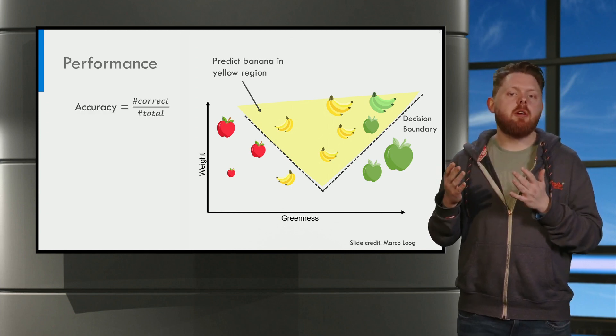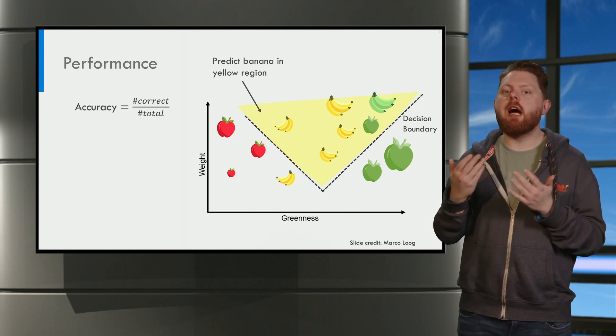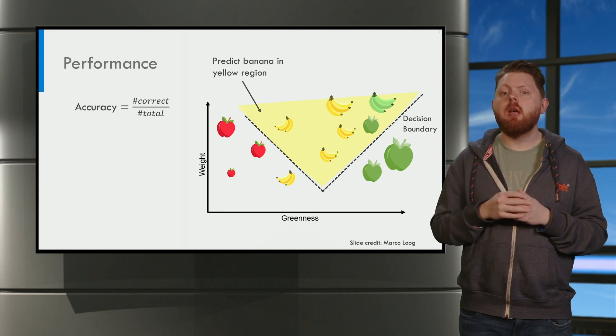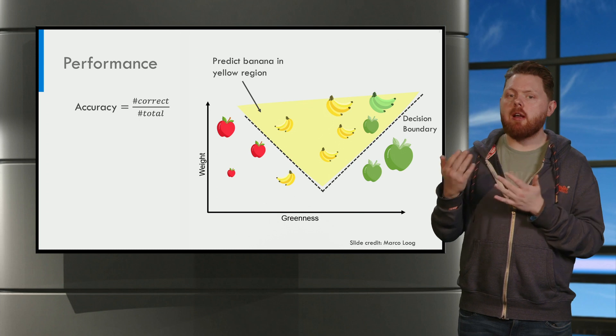The accuracy is the number of correctly predicted samples divided by the total number of objects. This is the percentage of objects that are correctly classified.